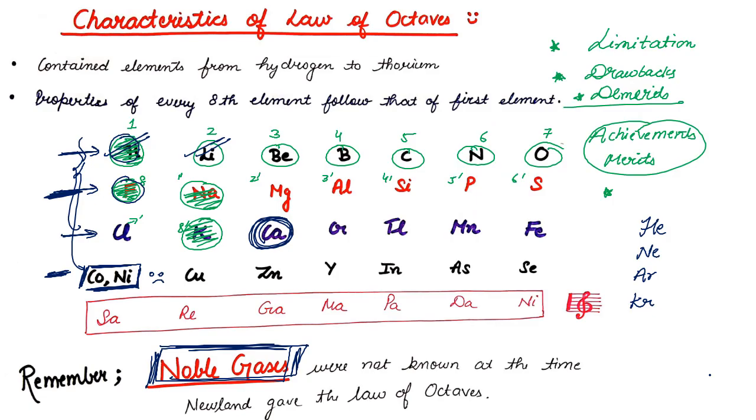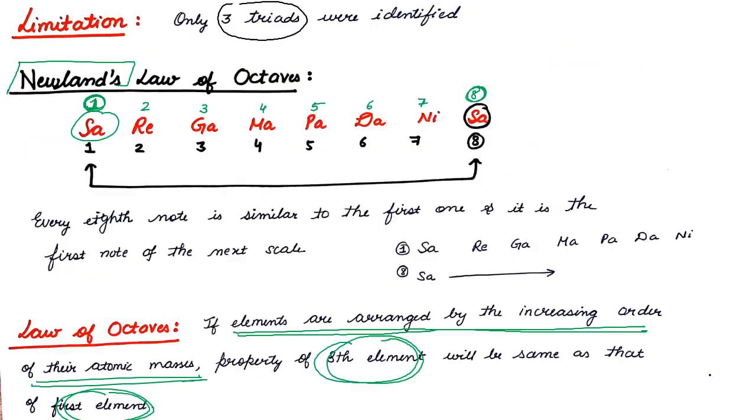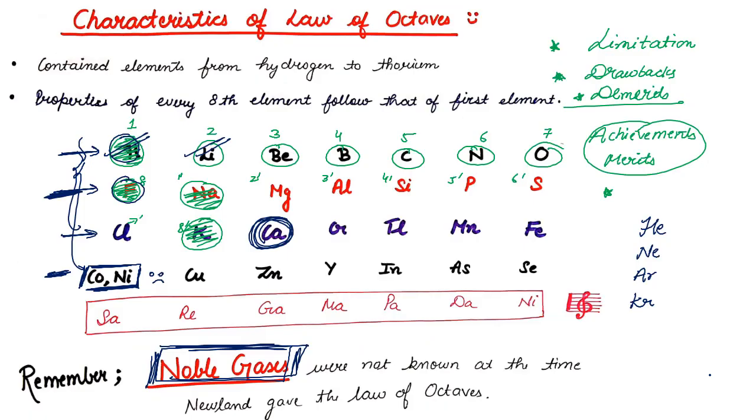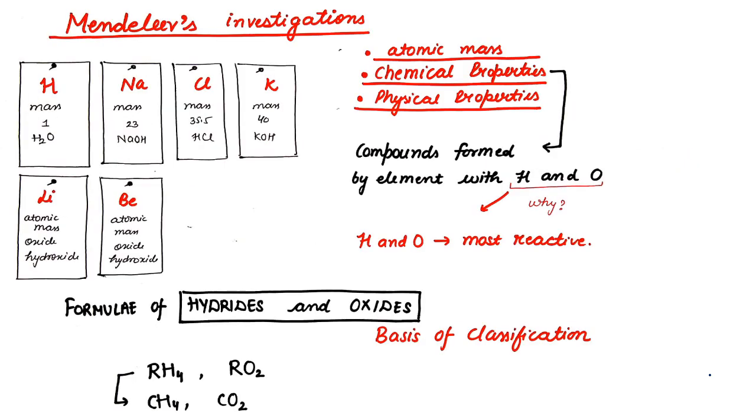I think you remember we had done the limitations, everything about the Newland Law of Octaves. Even after the rejection of Newland Law of Octaves, many scientists continued to search for a pattern to arrange all the elements. Then came a Russian chemist whose name was Mendeleev. He came into picture.